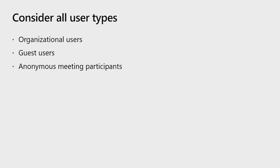If you need to distinguish between guests and regular users, what you can do is ask Graph for their user details, because guests will have a user type property that indicates that they are a guest and not a user. And with the new meeting extensibility apps, you'll start seeing a new user type: anonymous meeting participants. These are participants who joined the meeting from a meeting join link and who didn't sign into Teams. They exist only for the duration of the meeting and they don't have a corresponding entry inside Azure AD. So if you ask Graph about them, you won't get an answer at this point.